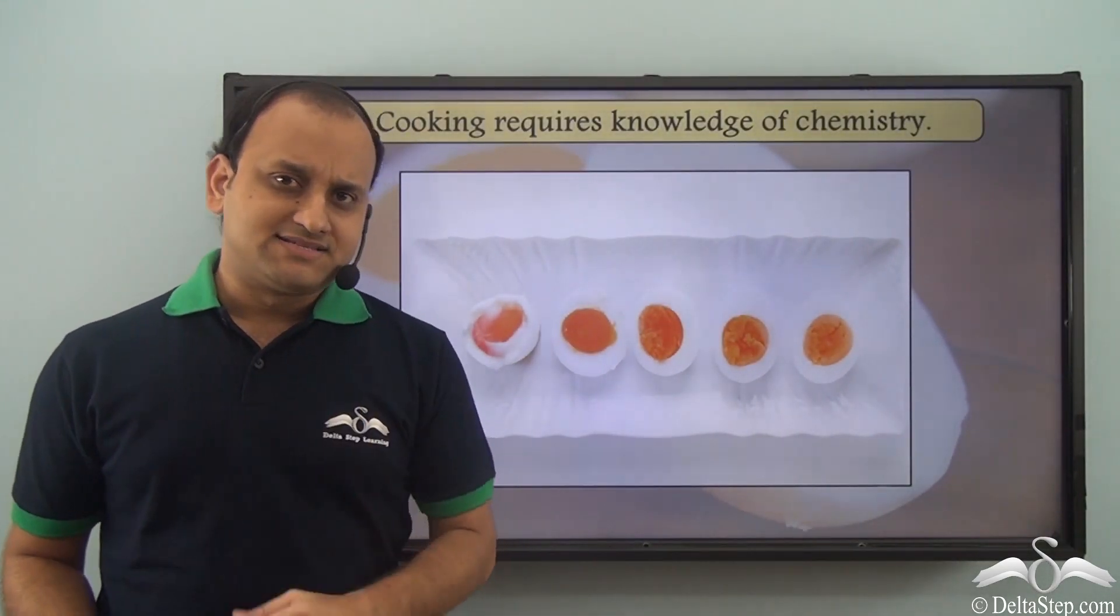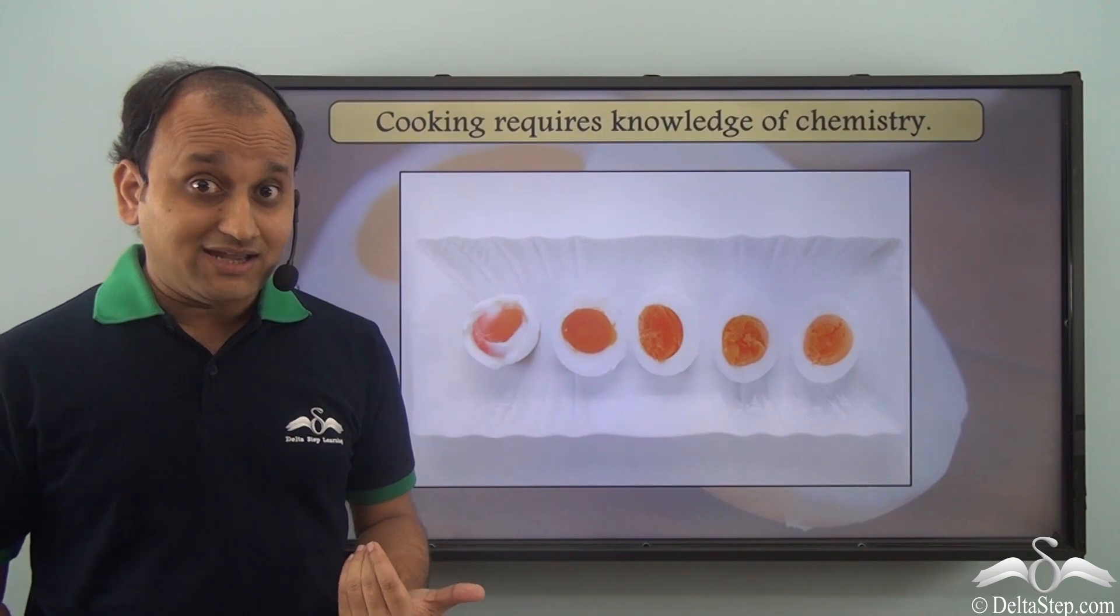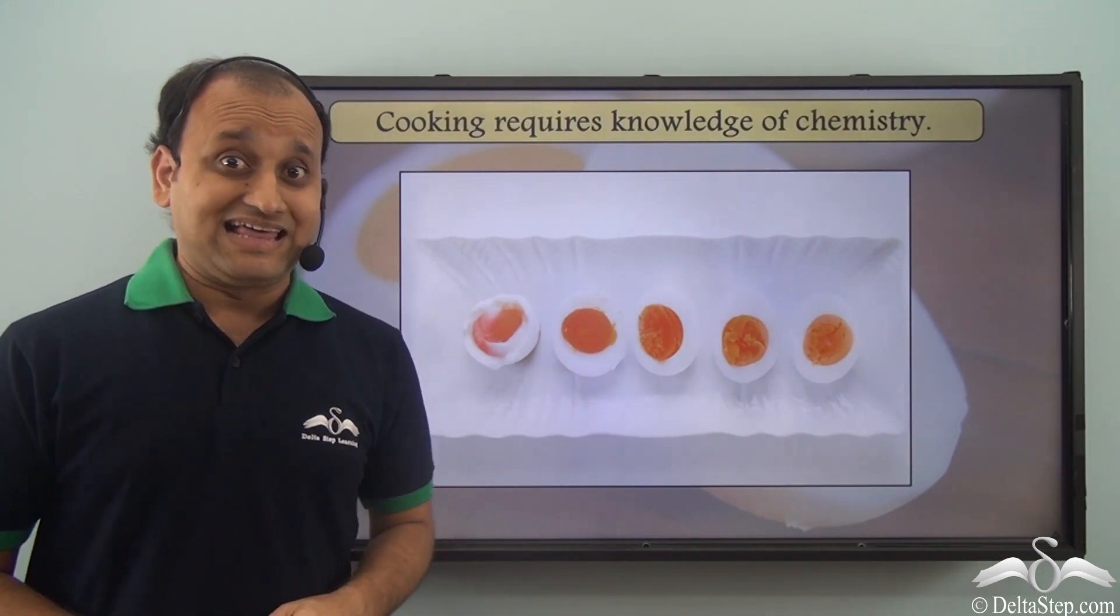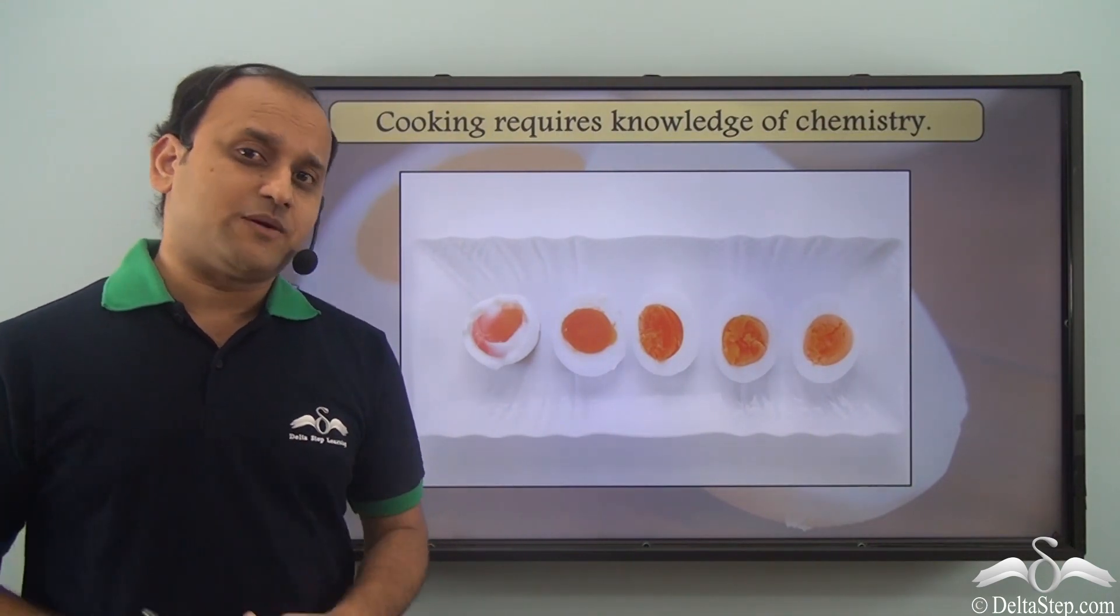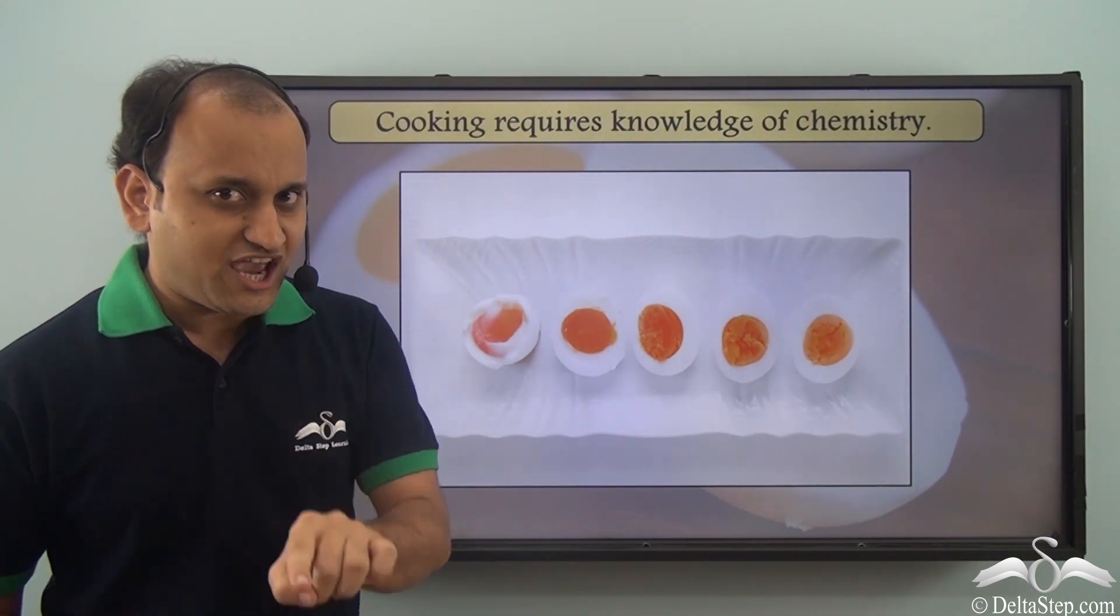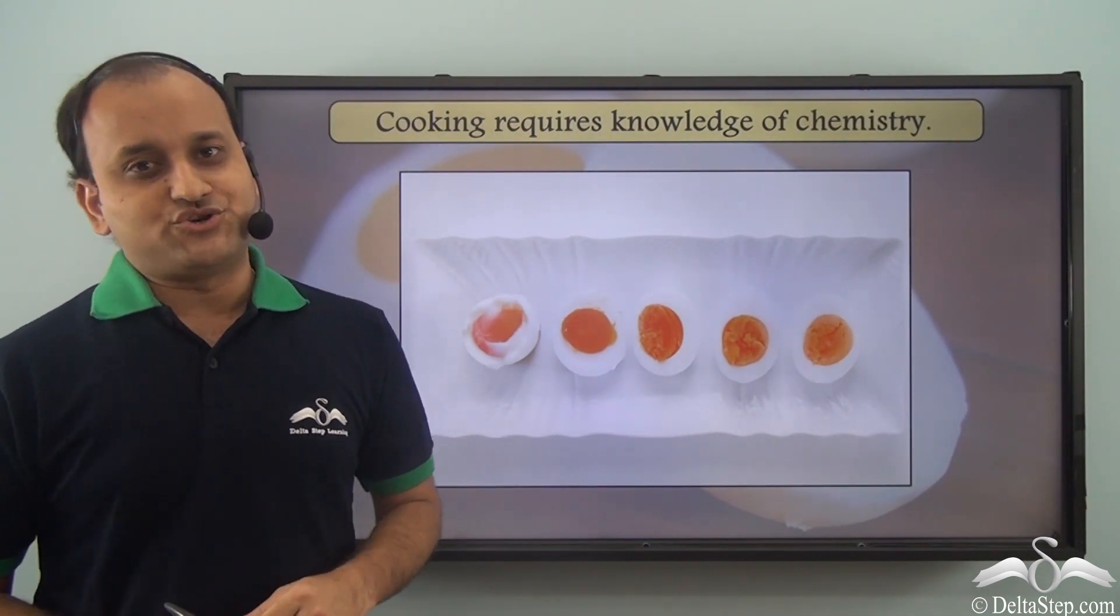So paracetamol is a chemical that is a product of chemistry that helps us get rid of pain and fever. So that was about medicines, but we also need to eat food to keep us healthy, isn't it? Now even cooking food requires knowledge of chemistry. So if you want to become a chef, you need to know chemistry.